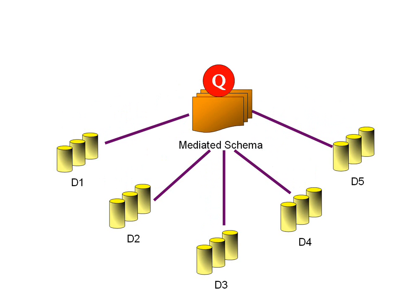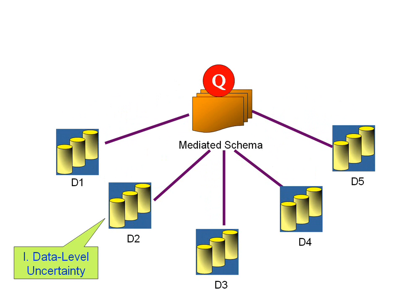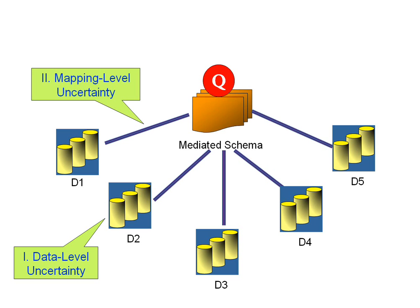However, many data integration applications need to deal with uncertainty at three levels. First, the source data may be extracted from unstructured data using information extraction techniques, and so can be imprecise. Second, the schema mappings may be approximate. This can be because in some applications such as offering access to information on the deep web, there are millions of data sources, so building and maintaining precise mappings are infeasible. This can also be because in some domains such as bioinformatics, it is not clear what the mappings should be.